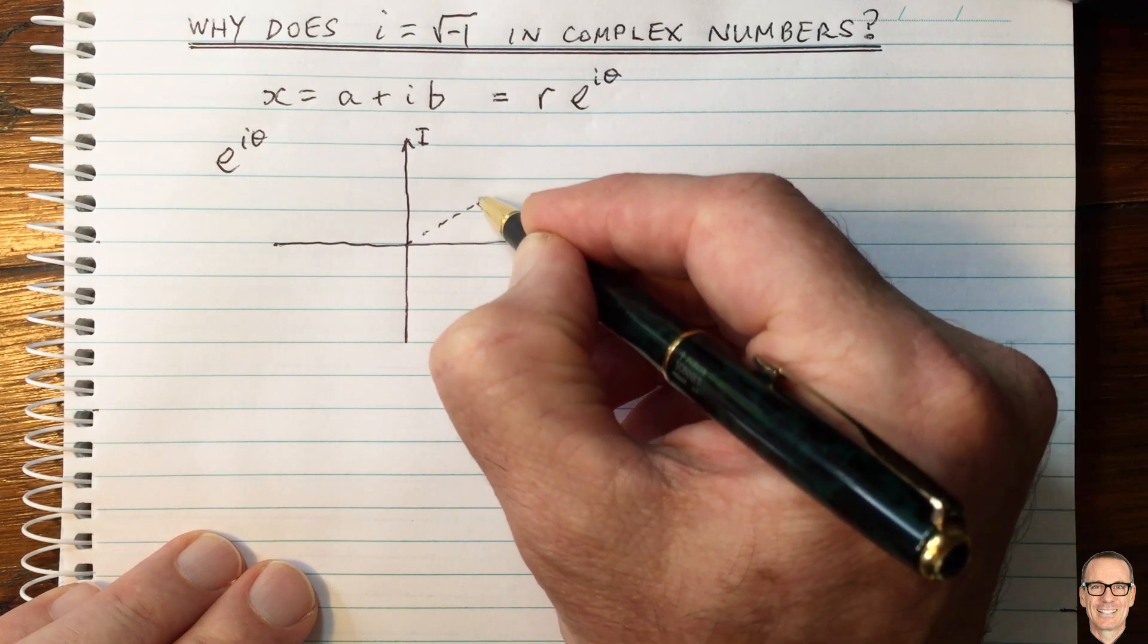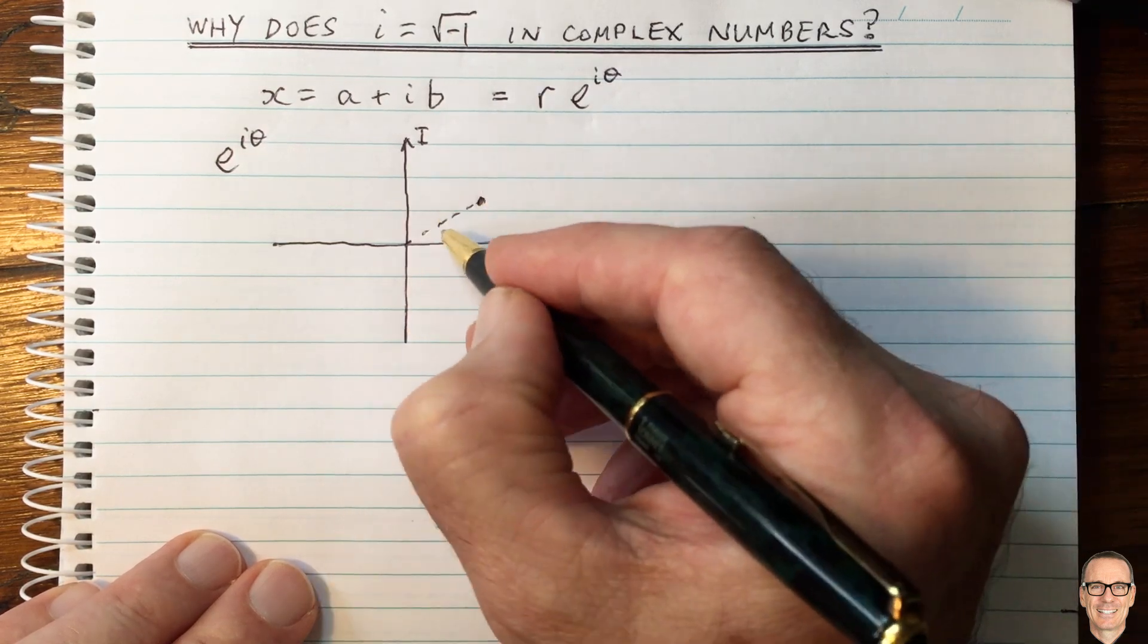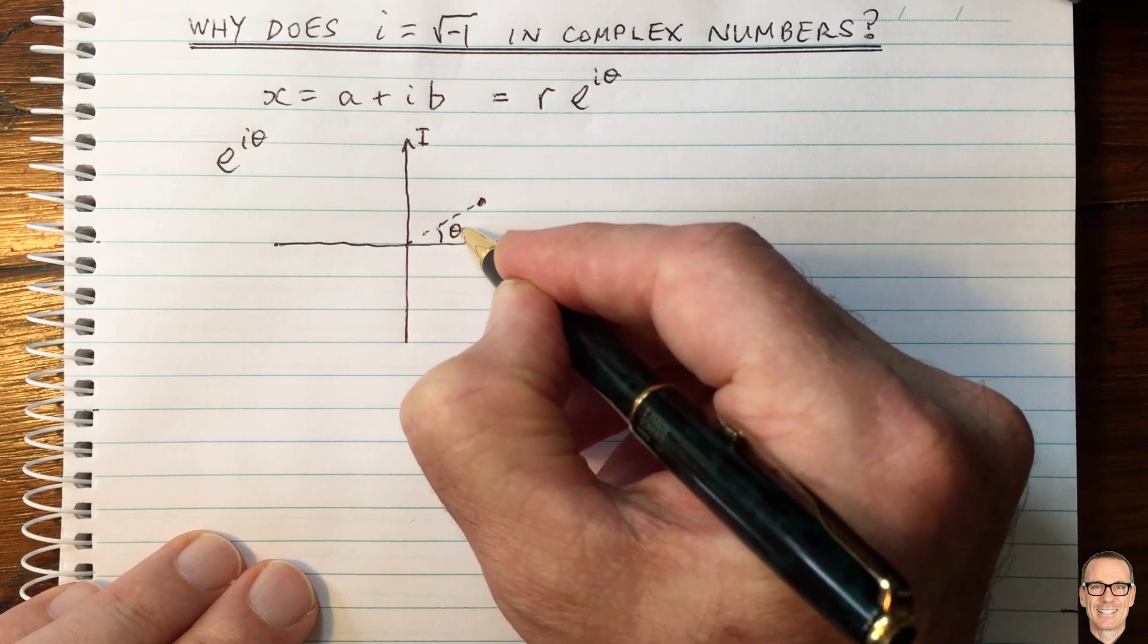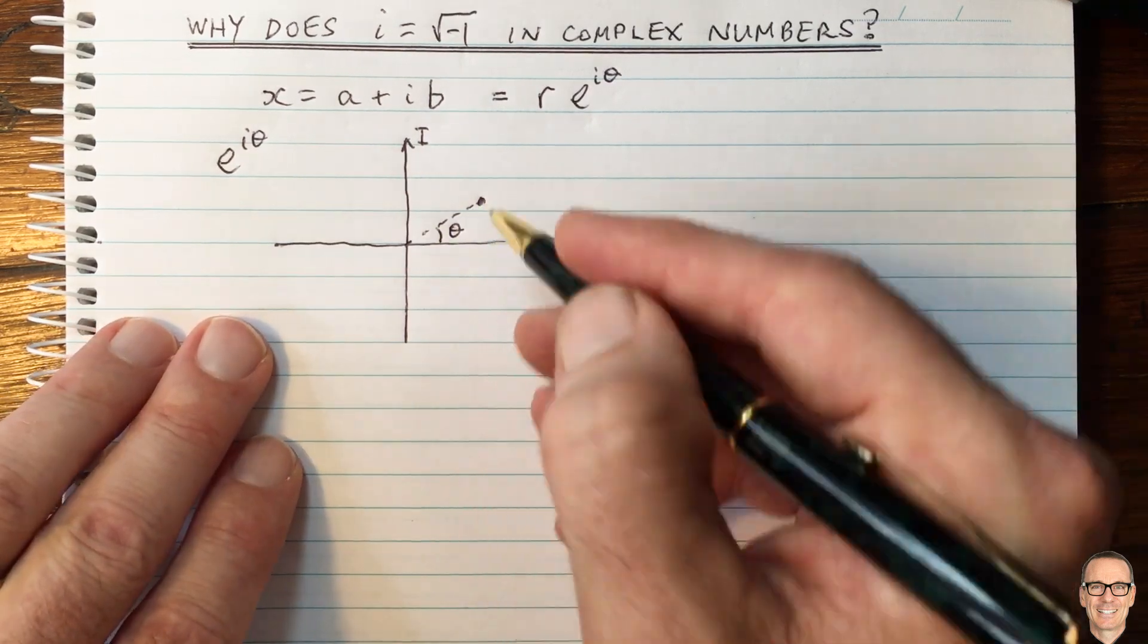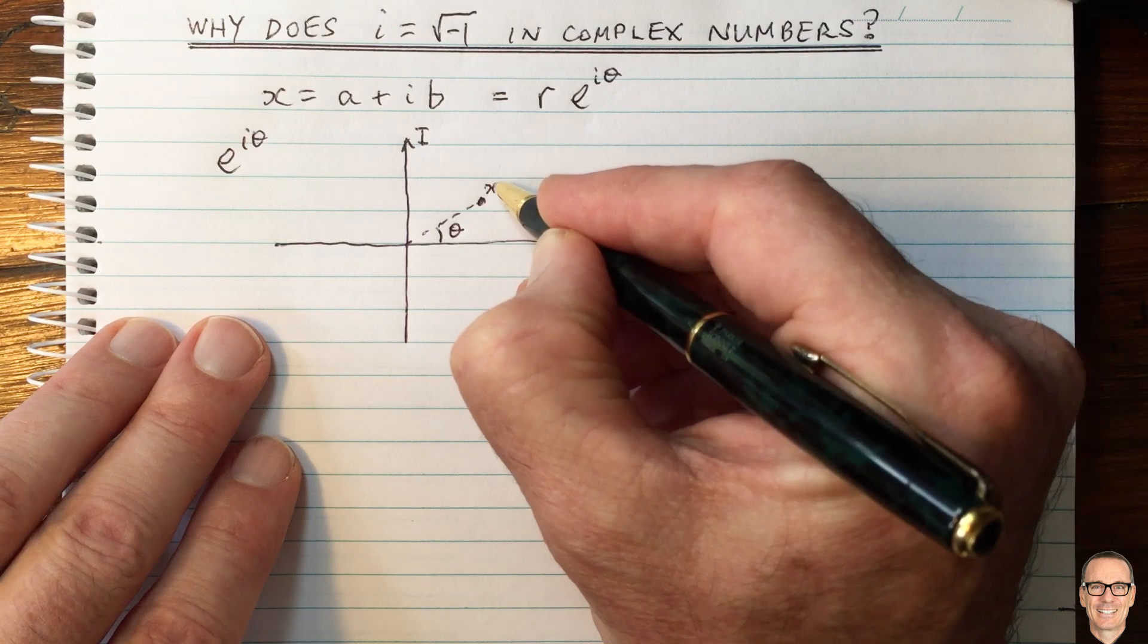So this distance around here, let's say that that equals 1, and this distance around here is theta. That's where the value x is on this complex plane.